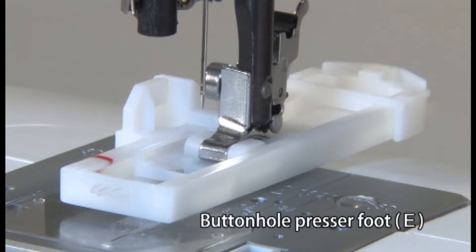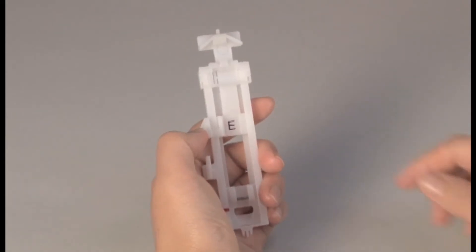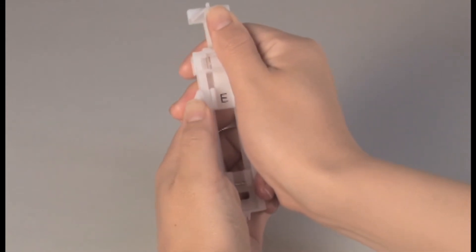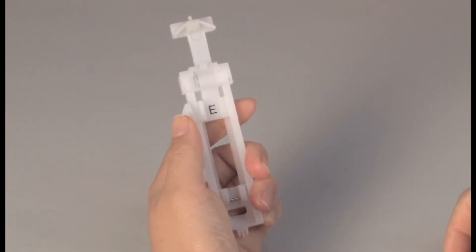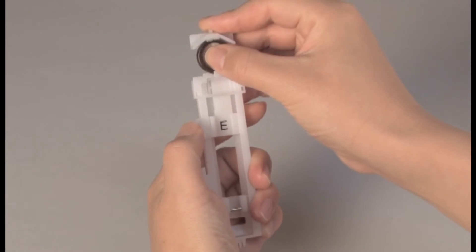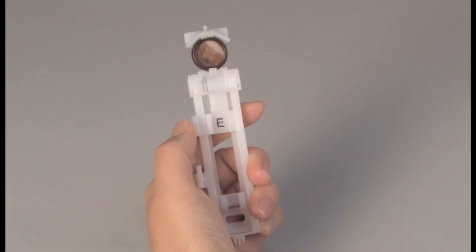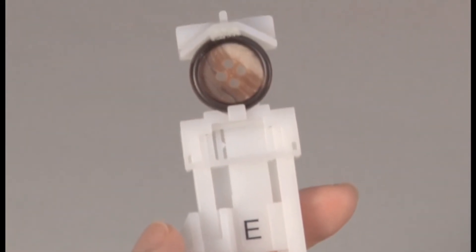Use buttonhole presser foot E for the stitch. Pull out the buttonholder and place the button, then push the holder to set the buttonhole length. The buttonhole size that matches the button is now set.